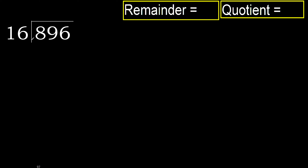896 divided by 16. 8 is less, therefore next. 89 is not less, therefore with 89.